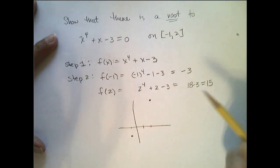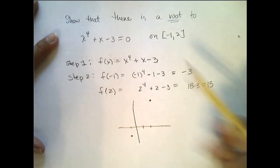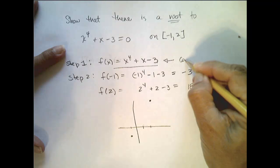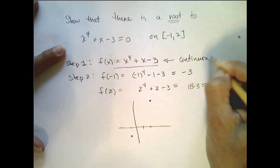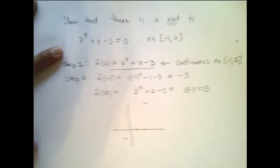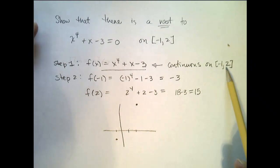Now this should start looking familiar to you in terms of the Intermediate Value Theorem. This right here is a polynomial, so we know this is a continuous function everywhere, so certainly continuous on this interval. So I have a function that is continuous on the closed interval.